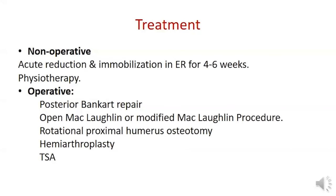Non-operative treatment is acute reduction and immobilization in external rotation for four to six weeks, followed by physiotherapy. Arthroscopic posterior Bankart repair is indicated for recurrent instability despite proper physiotherapy. If there is a reverse Hill-Sachs lesion smaller than 40%, open McLaughlin procedure is indicated — suturing or transfer of the subscapularis into the defect — or modified McLaughlin by transfer of the lesser tuberosity. If the reverse Hill-Sachs lesion is larger than 40%, rotational proximal humerus osteotomy, hemiarthroplasty, or total shoulder arthroplasty is indicated according to the presence or absence of glenohumeral arthritis.